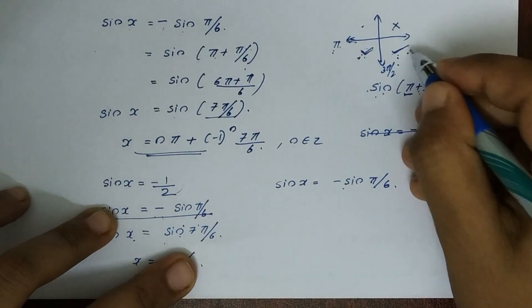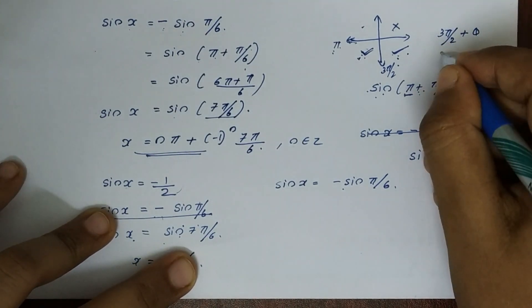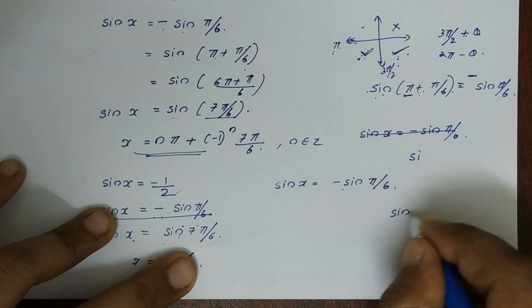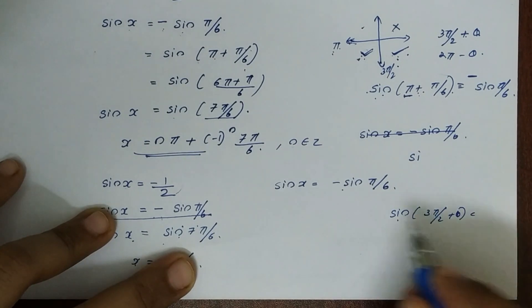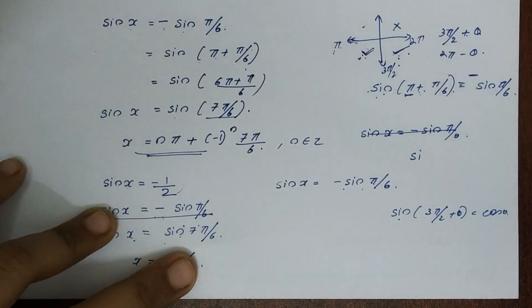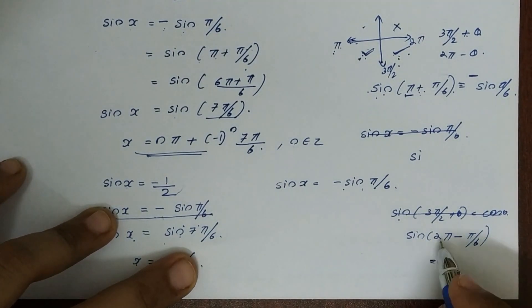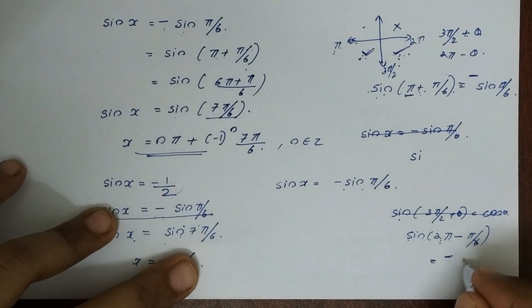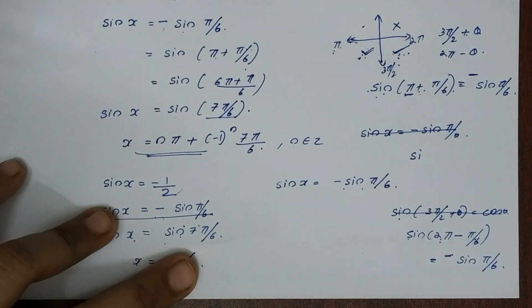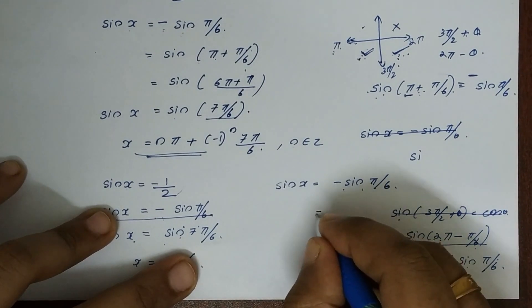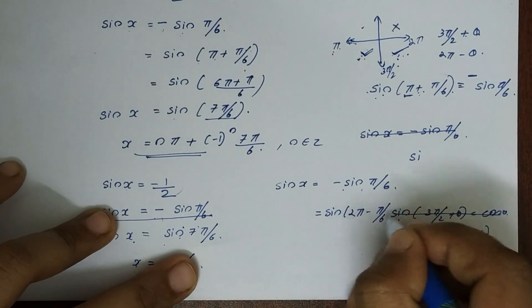For the fourth quadrant, we use the identity 2π minus θ. Sin(2π minus θ) gives us a negative sine value in the fourth quadrant but without changing the function. So sin(2π − π/6). If you change 2π, it doesn't change: that is sin(π/6) with sign change. So we compute sin(2π − π/6).